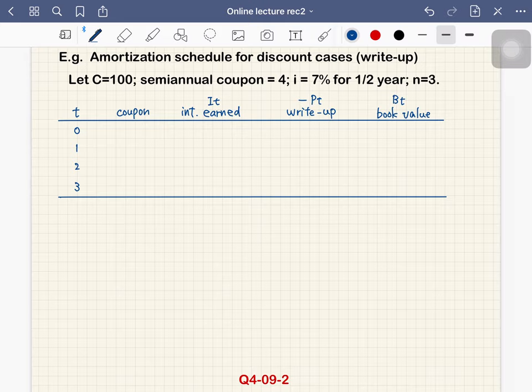Discount case means that B0 is less than 100, so actually the principal amount increases over time. So we have write-up. And one characteristic of this table is we write write-up in the table. So this is negative PD, not PD. So the sign is reversed.